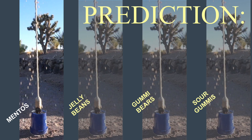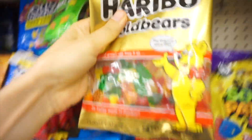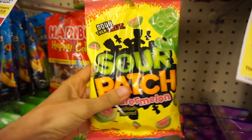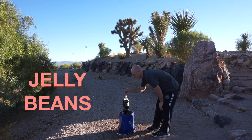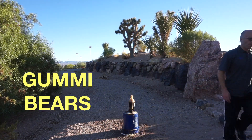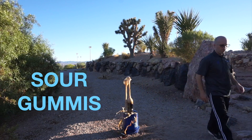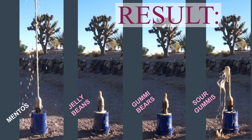If the sugar in our Mentos is the cause of our eruption, then we would expect other sweet candy to produce a similar effect. So let's test jelly beans, gummy bears, and sour watermelon candies. The other candy produced much smaller reactions than the Mentos. The results did not support our hypothesis.